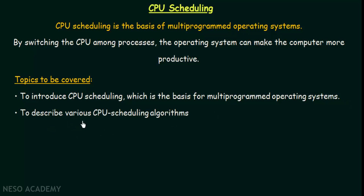Secondly, we are going to describe the various CPU scheduling algorithms. There are different ways in which CPU scheduling can be done, and we will see the various algorithms that help in accomplishing CPU scheduling. We will see how these algorithms differ from each other and which of these algorithms perform better in particular situations. First we will study what CPU scheduling is, then we will look into the algorithms.